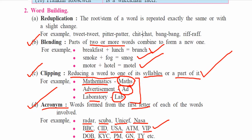Now you know the meaning of reduplication, blending, clipping, and acronym. I request all students to find and identify different examples of all these word formation processes — it will also help you enrich your vocabulary. In this way we have discussed the warming up section of this particular lesson.